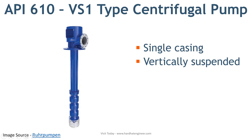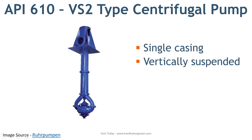Next is VS2 type pump. VS2 uses a volute casing design as compared to VS1. All other factors are similar to VS1. The only difference is the pump casing design.